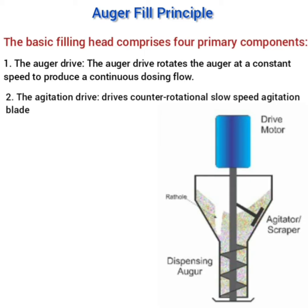The second component is the agitation drive, which drives a counter-rotational slow-speed agitation blade — also called a scraper blade. This also helps move material from the hopper down to the capsule bodies. The third component is the hopper, which holds the material that is to be filled into the capsule.